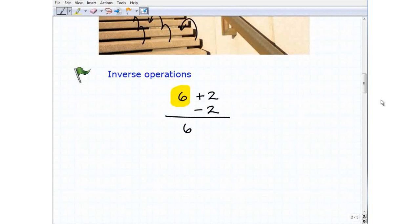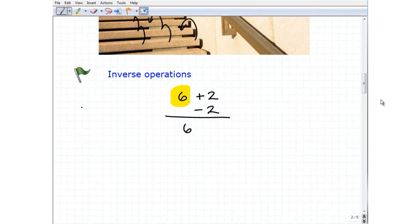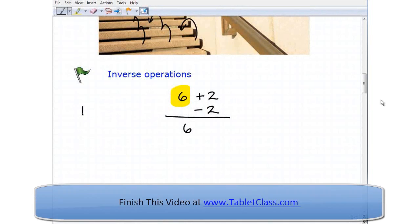So this undoing of something is an inverse. So when I added 2, to undo that addition, I used subtraction. So an inverse operation is an undoing operation. So for addition, it's going to be subtraction. Let's take a look at another example.